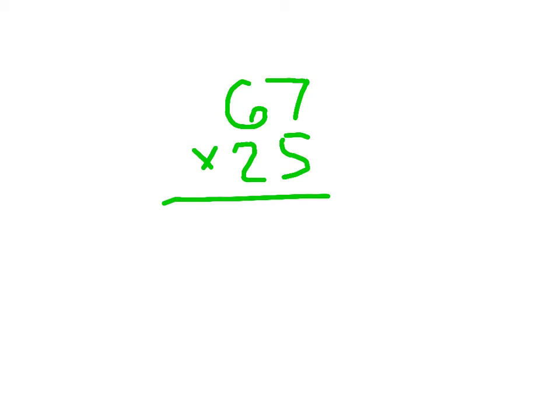We start with the 1s place — the 5, not the 2. So 5 times 7 is 35: write the 5, regroup the 3. 5 times 6 is 30, plus 3 is 33. Remember to always cross out those regroups, because we're figuring out the product of 67 times 5 and we don't want to accidentally use that regroup again.